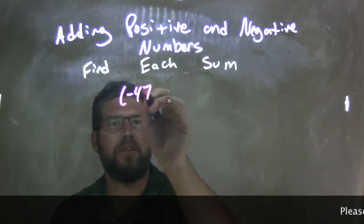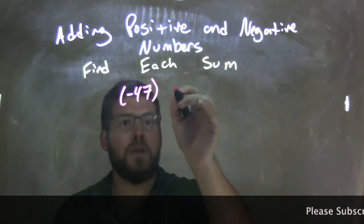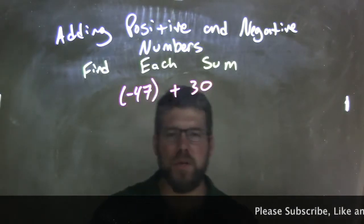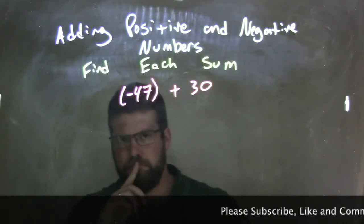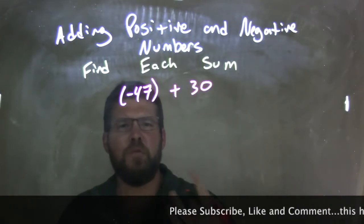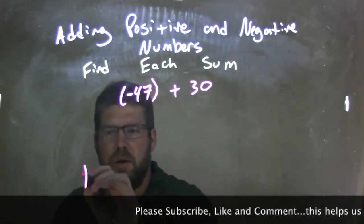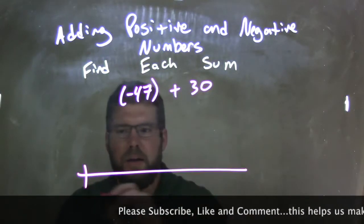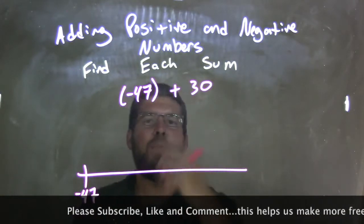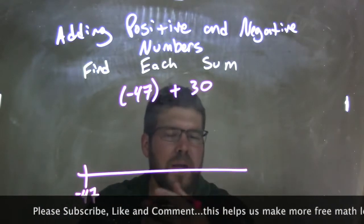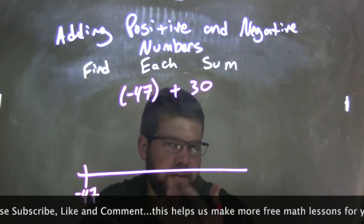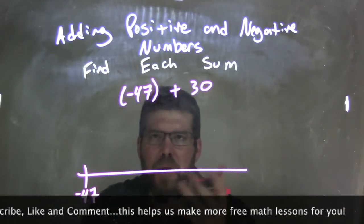Negative 47 plus 30. I like to visualize a number line. We're going to have negative 47, and we're adding 30. 30 is really broken up as 10 plus 10 plus 10 — three 10s added in a row. So if I have negative 47 and I add just 10, jumping 10 units, I have negative 37.